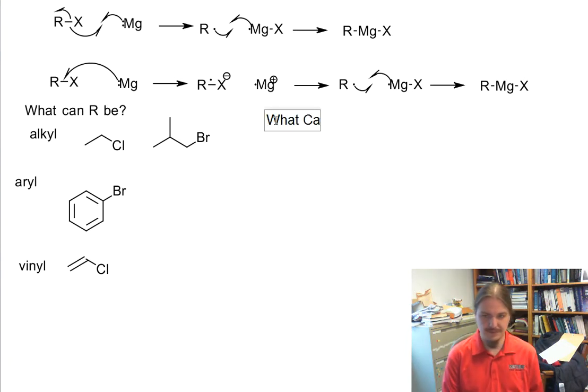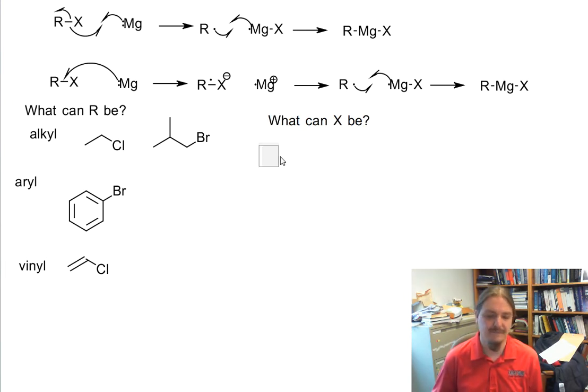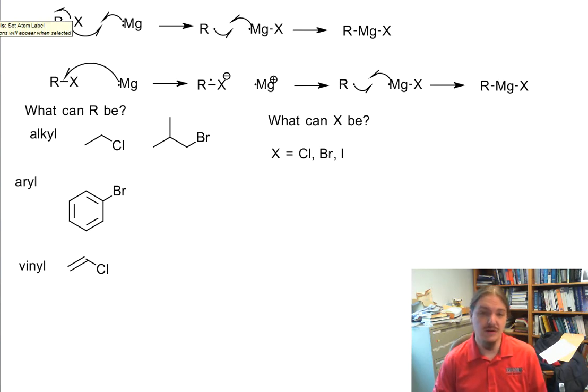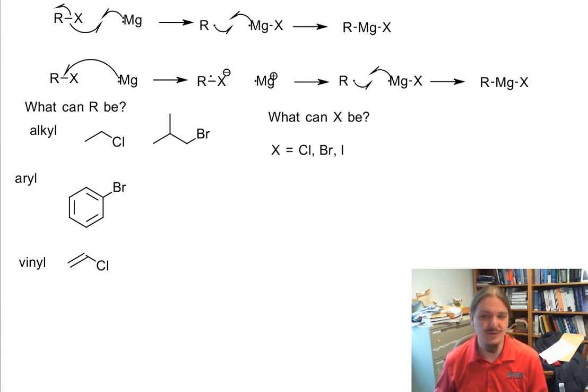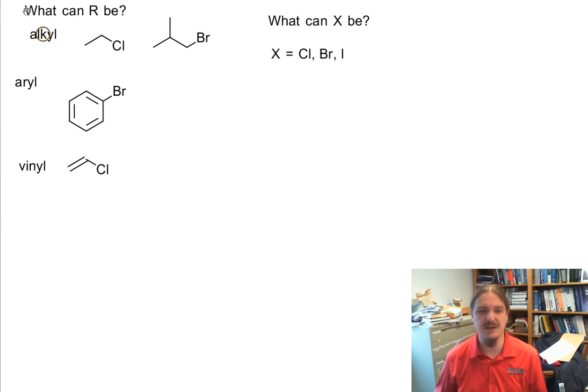What can X be? X can equal chlorine, bromine, or iodine. I know that sometimes iodine doesn't play well, but this is a case where iodine can play well. Fluorine doesn't play well - the carbon-fluorine bond is way too strong. Iodine is actually the best of the halogens because it forms the weakest carbon-halogen bond, though organic iodides are harder to prepare because iodine doesn't play well in addition reactions. So chlorine and bromine are the more common halogens used for this kind of reaction.